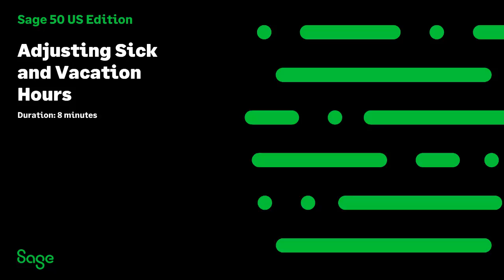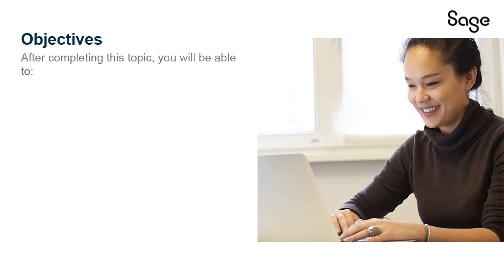Welcome to the Sage 50 U.S. Edition Anytime Learning Topic. In this topic, you will learn how to manually adjust an employee's vacation and sick time information. After completing this Anytime Learning Topic, you will be able to adjust vacation and sick time hours for an employee.